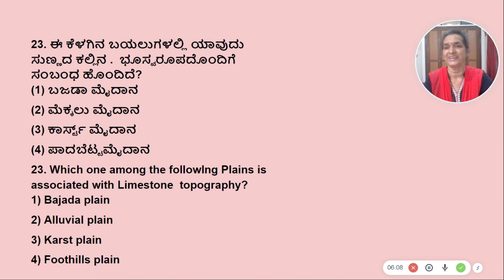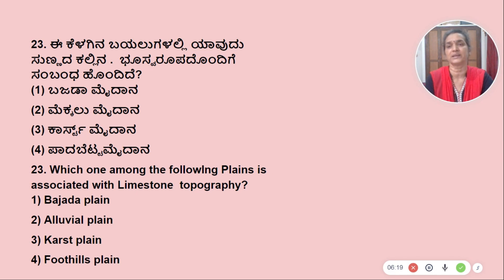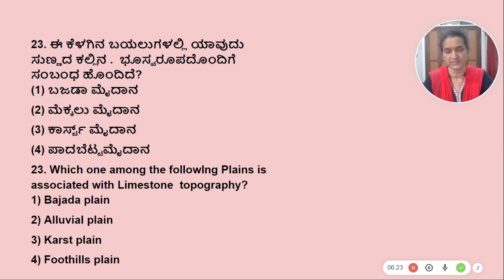Chandraprabha is located in Uttar Pradesh. Raja Dari and Devodari waterfalls are very famous in this area. There are many waterfalls in Uttar Pradesh.